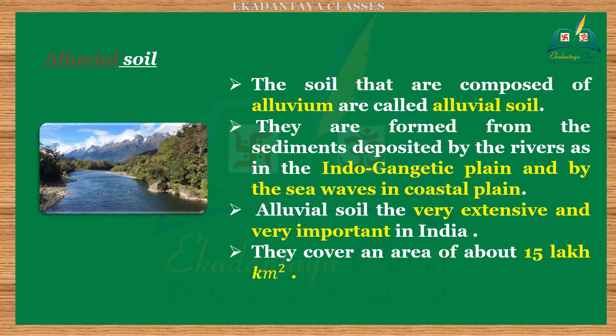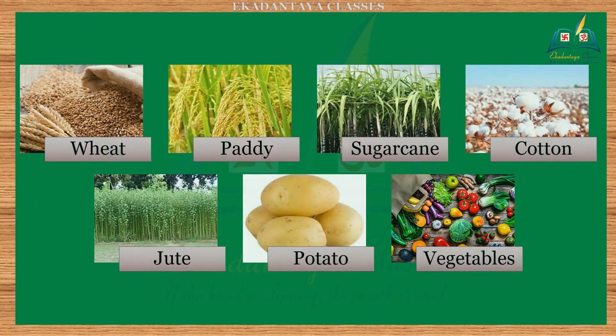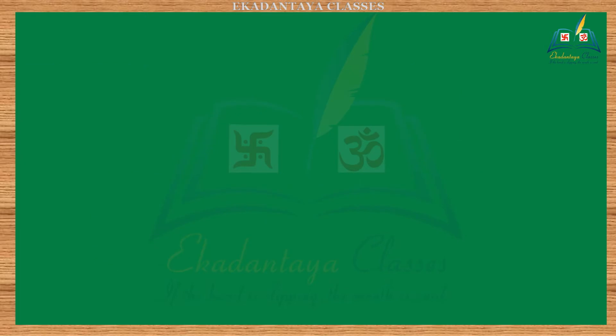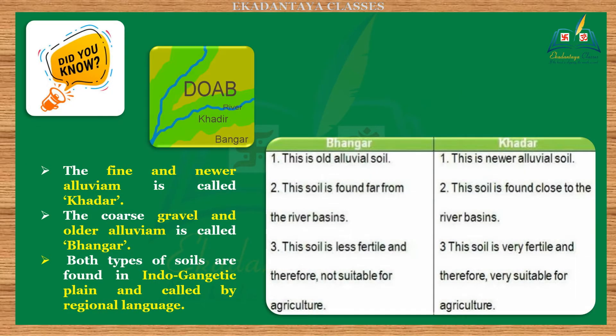One: alluvial soil. Soils that are composed of alluvium are called alluvial soils. They are formed from the sediments deposited by rivers, as in the Indo-Gangetic plain, and by sea waves along coastal plains. Alluvial soils are very extensive and very important in India; they contribute greatly to the development of agriculture. They cover an area of about 15 lakh square kilometers. The main crops grown are wheat, paddy, sugarcane, cotton, jute, potato, and vegetables.